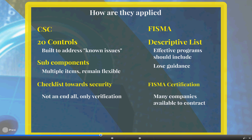FISMA is more of a descriptive list — not quite as defined as the 20 controls with known subsets. It basically says effective information security programs should include X, Y, and Z. It doesn't define what you need to have like the 20 controls do, and it doesn't really give a checklist. It's kind of a loose guidance. There are also multiple companies available to help with that certification, though it has become somewhat commercialized and gone a bit by the wayside in terms of effectiveness.